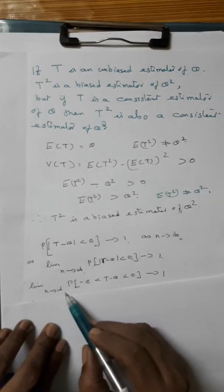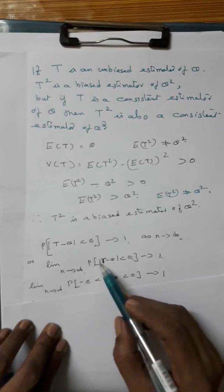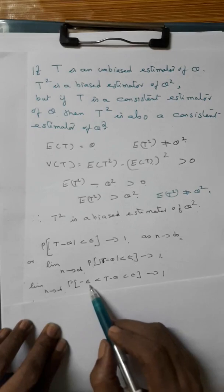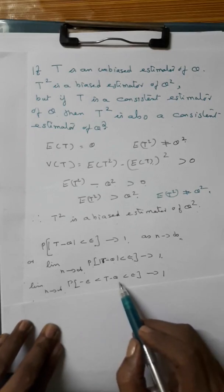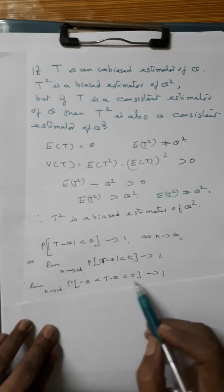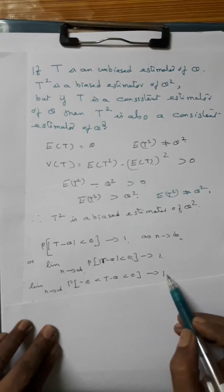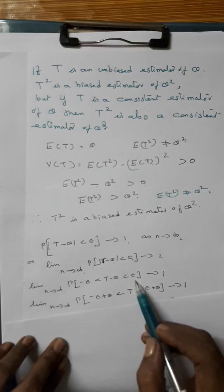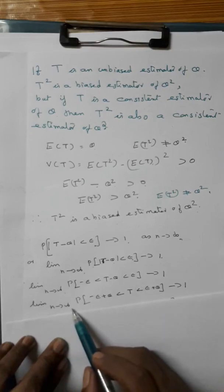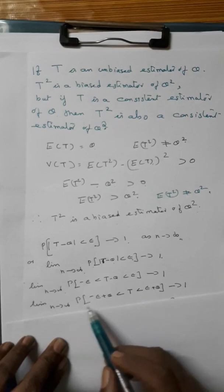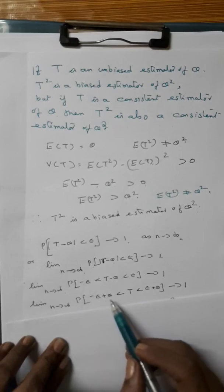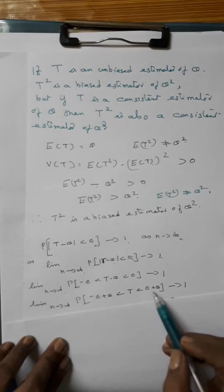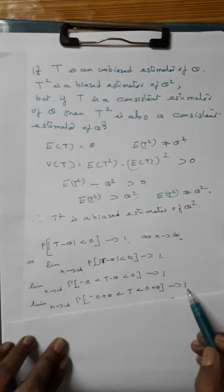Let us remove the modulus sign. So we get limit n tends to infinity of P of minus epsilon less than T minus theta less than epsilon tends to 1. Adding theta to all three parts, we get limit n tends to infinity of P of theta minus epsilon less than T less than theta plus epsilon tends to 1.